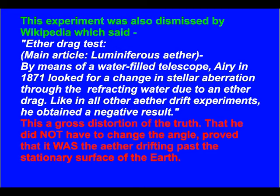Like in all other ether drift experiments, he obtained a negative result. This is a gross distortion of the truth. That he did not have to change the angle proved that it was the ether drifting past the stationary surface of the Earth.